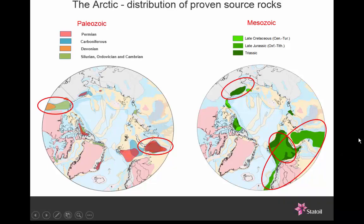Lots of nice source rocks, lots of resources. Does that mean areas like this one with the question mark are no good? No — it simply means that there's almost no data there. We just don't know, and we have to infer where the source rocks are. This is the East Siberian Shelf, and compared to areas like the Barents Sea and Alaska, you're talking about just a few seismic lines and no wells whatsoever. Everything there is inference. The point I want to make about the Arctic is the vast differences in data density and data coverage.